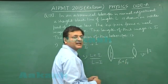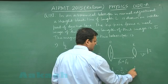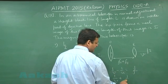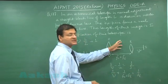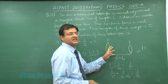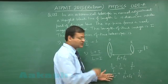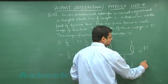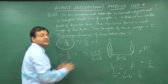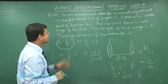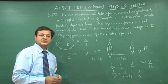Now v by u will give the magnification. You can use the lens formula: 1/v minus 1/u equals 1/f, which gives 1/v plus 1/(fo + fe) equals 1/fe. This is the image of length l formed by the eyepiece. From here you can calculate v, and once you compute the magnification as v by u, you will simply get the expression l by i. So the magnification of the telescope in this situation is l/i — that is the answer to question 177.